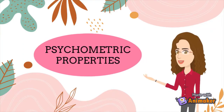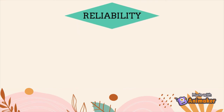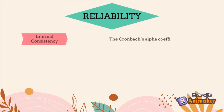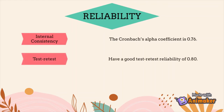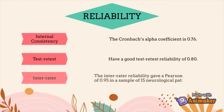Next, we will look into the psychometric properties. For reliability, the internal consistency Cronbach's Alpha coefficient is 0.76. This assessment has a good test-retest reliability of 0.80, and the interrater reliability gives a Pearson correlation of 0.95 in a sample of 15 neurological patients.